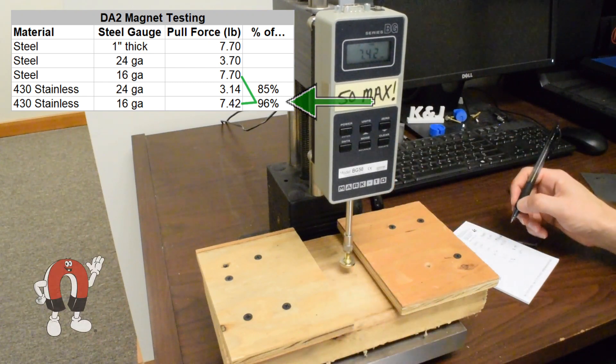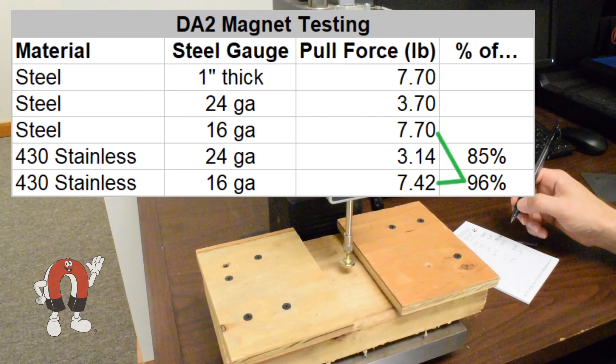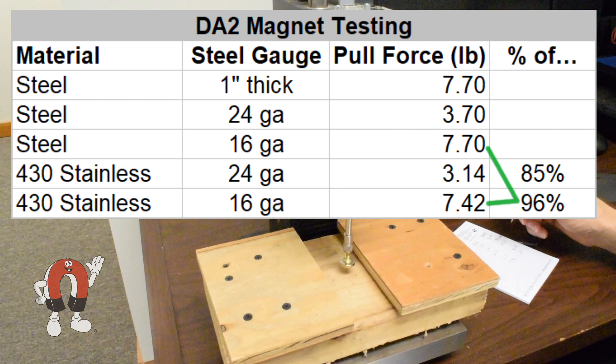Both stainless steel pieces give a slightly weaker pull force. It looks weaker for the thinner steel. Is this always true? Let's test a different magnet and see.